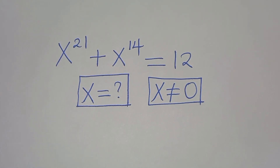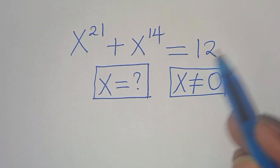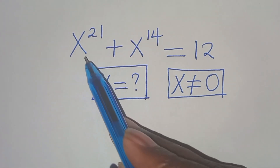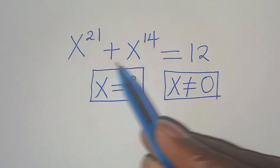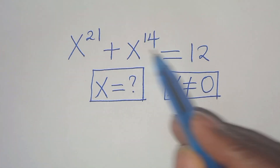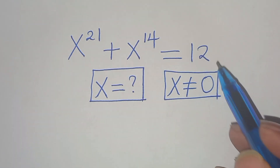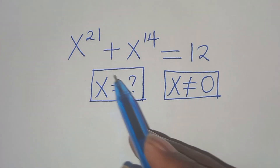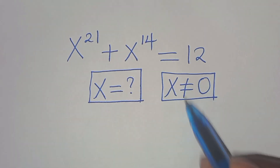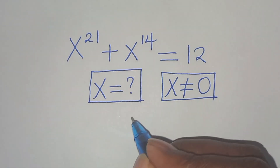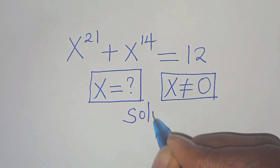Welcome everyone. You are invited to solve this algebra problem: x to the power of 21 plus x to the power of 14 equals 12. What is the value of x, given that x is not equal to 0? Let's work through a solution.